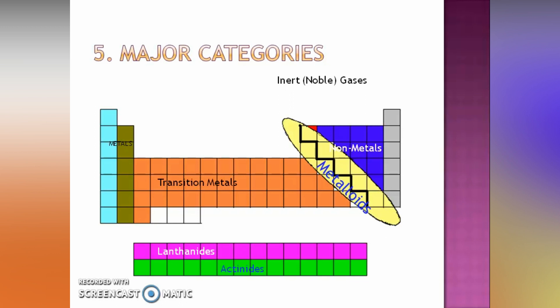Then, the last column here which is the group 8 are called inert gases. It's called the noble gases and in some cases we call them the rare gases.